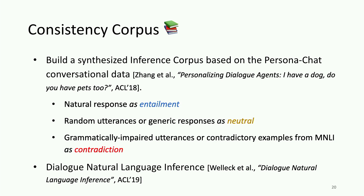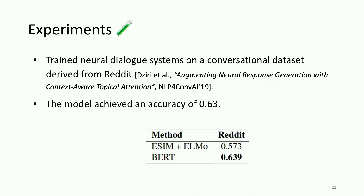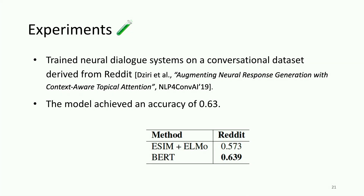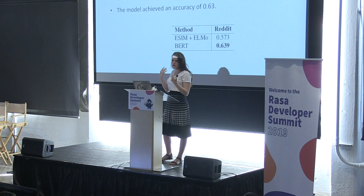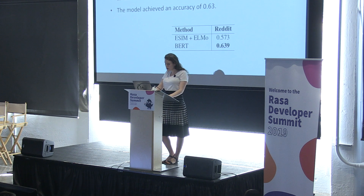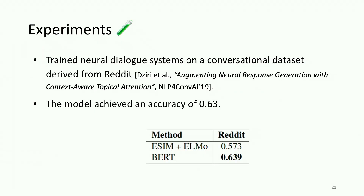There is also a recent work by the Facebook research group providing a dialogue natural language inference dataset annotated by humans using Amazon Mechanical Turk, with very similar results to our work. For our experiments, we trained neural dialogue systems on a conversational dataset derived from Reddit to test the quality of responses generated by state-of-the-art systems such as vanilla sequence-to-sequence, sequence-to-sequence with attention, and hierarchical sequence-to-sequence models. Our BERT model fine-tuned on the consistency task achieved an accuracy of 0.63, which is a reasonable performance as a first attempt for detecting inconsistency in dialogue systems.